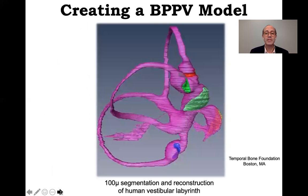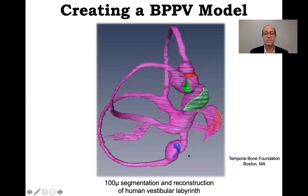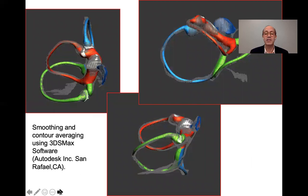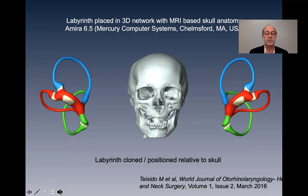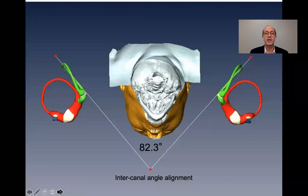In order to solve this problem, I worked for some time on creating a model useful to practitioners and researchers alike. We segmented a human labyrinth with the help of the Temporal Bone Foundation, Rindy Northrup, and colleagues in Boston. This segmentation at 100 microns was digitized histologically, then scanned digitally and reconstructed to create a labyrinth that could be used for study. It was then smoothed by consulting animators and cloned, then positioned correctly to a human skull according to normative positions established by a team at Johns Hopkins using CT scan.